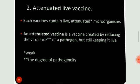Next is attenuated live vaccines. Such vaccines contain live attenuated microorganisms. An attenuated vaccine is created by reducing the virulence of a pathogen but still keeping it live. This is a weak vaccine and the degree of pathogenicity is low.